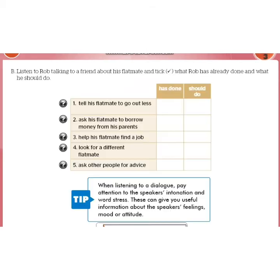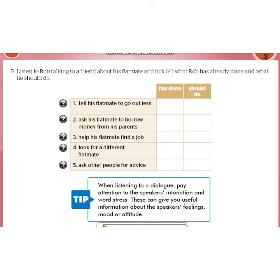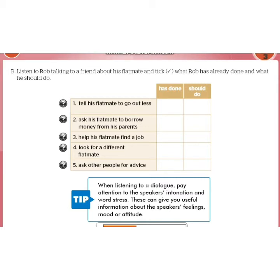After listening to the dialogue, the right answer is number four — his flatmate is a liar. Now listen to Rob talking to a friend about his flatmate and tick what Rob has already done and what he should do. Hi Vicky, it's Rob. I need some advice about Steve. Not him again — I don't understand why you're flatmates with him. He's a mess. He doesn't have any money — he should stay in and save a bit. I mentioned that to him but he doesn't listen. He thinks university is just a chance to have a good time. We always argue about that. Doesn't he have any studying to do? He never seems to. It sounds like he doesn't care about his life, but he has to consider other people — he's not living alone, is he?